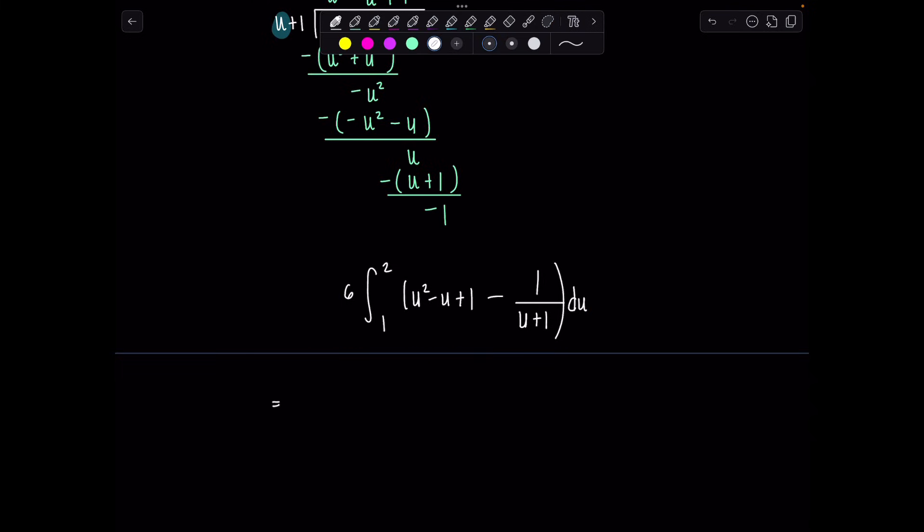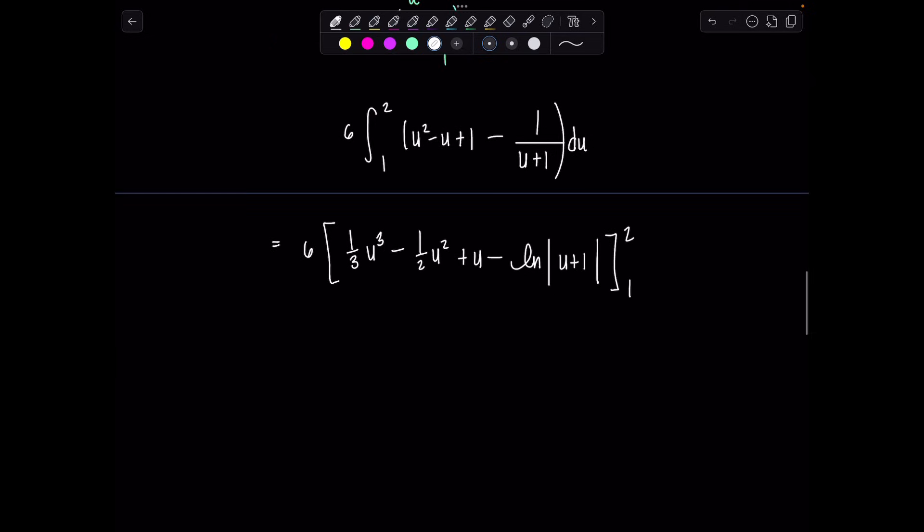Keep the 6 outside. It's minding its own business. Don't make life worse. We're ready to integrate. So we'll have 1/3 u cubed minus 1/2 u squared plus u minus ln absolute value u plus 1 evaluated from 1 to 2. Very good. So 6 is out there. I'm going to have 1/3 times 2 cubed minus 1/2 times 4 plus 2 minus ln of 3. That's the upper limit minus lower limit. It's going to be 1/3 minus 1/2 plus 1 minus ln 2.